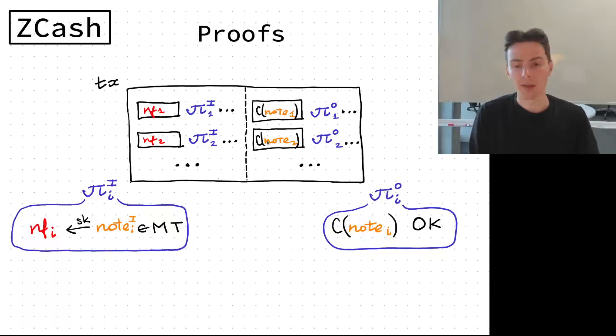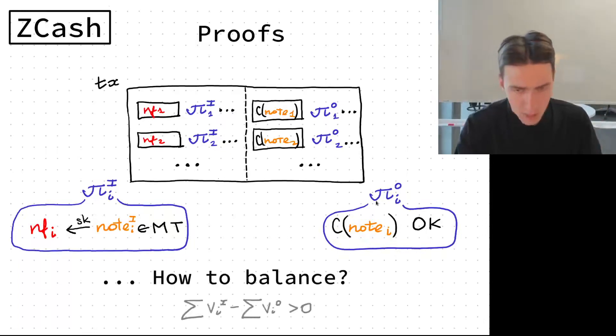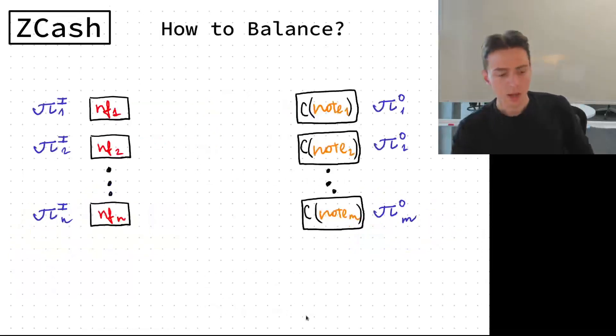One thing that is not solved by NIZK directly is the balance. How do we make sure that the values inside the input notes and the values inside output notes balance, so input values minus output values is more than zero?